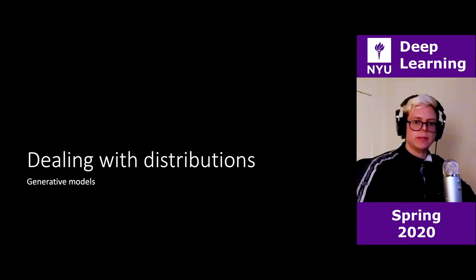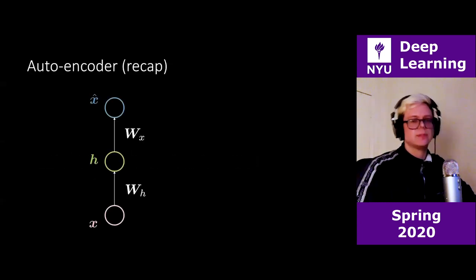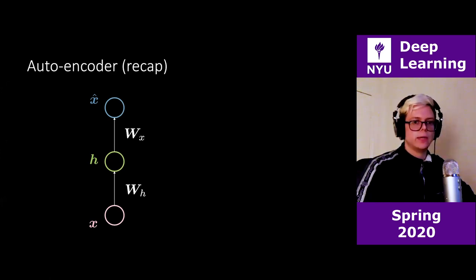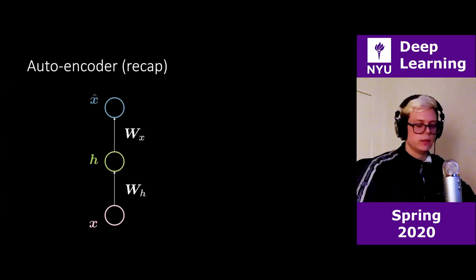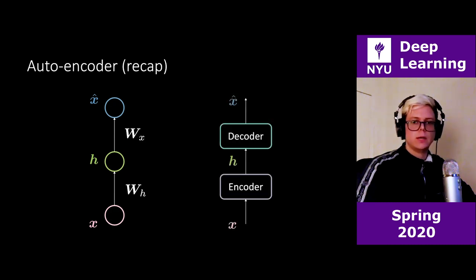Let's get back to generative models, which we started. Let's restart with a quick review of autoencoders. We have an input at the bottom in pink — you can see the colors — then a rotation, an affine transformation, then the hidden layer, another rotation, and the final output, which we try to enforce to be similar to the input.